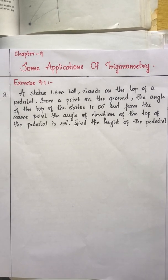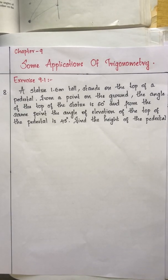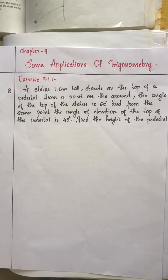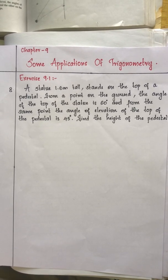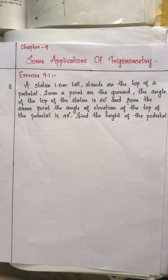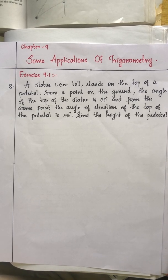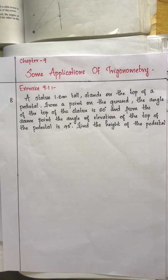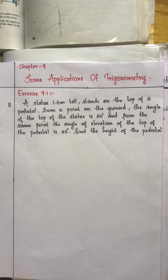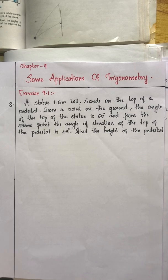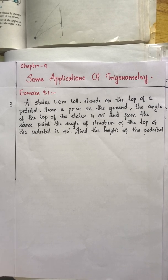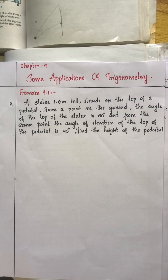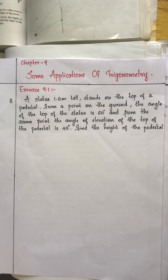Hi students, today let us discuss question number 8 from exercise 9.1 in the chapter Some Applications of Trigonometry. The question is: a statue 1.6 meters tall stands on the top of a pedestal. From a point on the ground, the angle of elevation of the top of the statue is 60 degrees, and from the same point, the angle of elevation of the top of the pedestal is 45 degrees. Find the height of the pedestal.